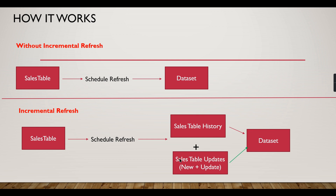Your dataset will combine results from both. The historical data — say last 10 years — you are not going to touch; it won't change. Only the current year and new records need to be refreshed. So only the updates table is refreshed on every schedule. The historical data is stored once at first deployment and never touched again. One drawback: once you publish, you cannot download the PBIX file since the partitions are stored in Power BI Service.